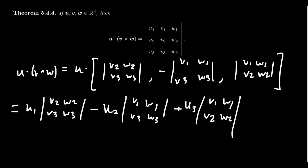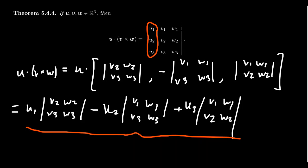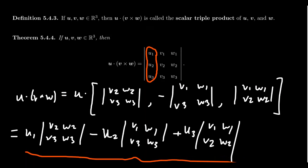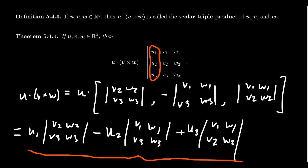You can see that this final expression is just the cofactor expansion along the first column of this determinant, which then gives us the equality we're looking for. So this triple product we have coincides with the determinant calculation in the context of three by threes.